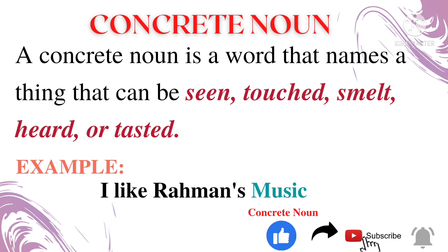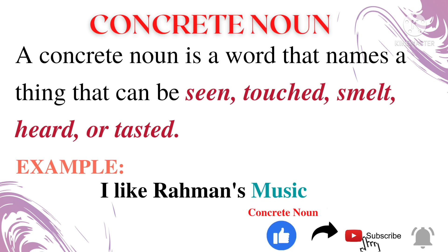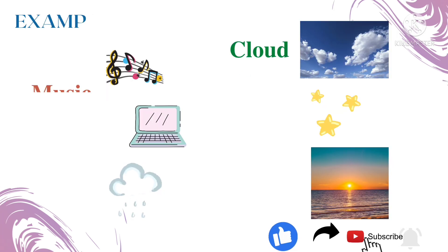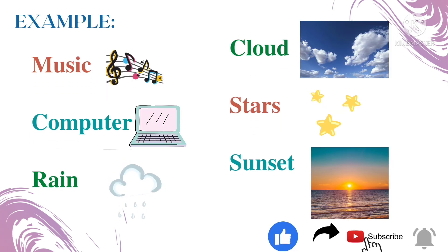The last one is concrete noun. A concrete noun is a word that means a thing that can be seen, touched, smelled, heard, or tasted. Example: 'I like Rahman's music' — you can hear the music, so the word 'music' is the concrete noun. More examples: music, computer, rain, cloud, stars, and sunset — all these nouns can be seen, heard, or touched.